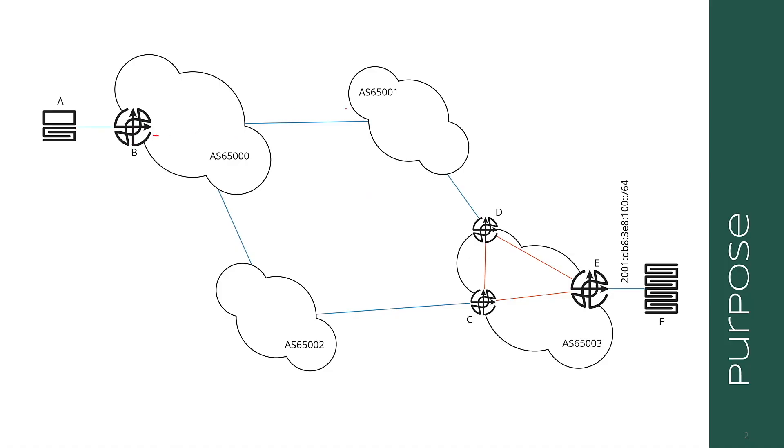A route contains more information than reachability info. It contains, for instance, a path along which traffic might flow and next hops such as D and E. This information is part of the route but not part of the reachability information. In BGP, the NLRI — or Network Layer Reachability Information — has a set of attributes that describe the other information that turns the NLRI into a route.